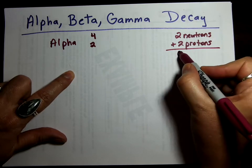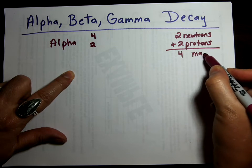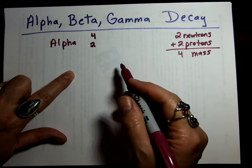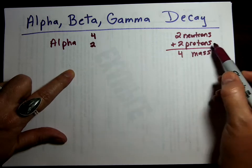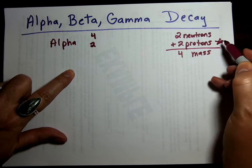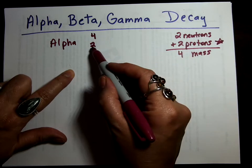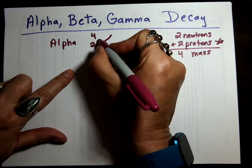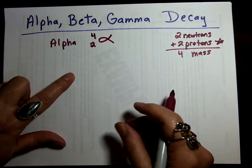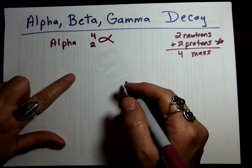So the total mass is 4, and mass is always the top number. Now the bottom number is always the number of protons only, and there's 2, and that's why 2 is the bottom number. And then alpha kind of looks like a fish. So that symbol is an alpha symbol.